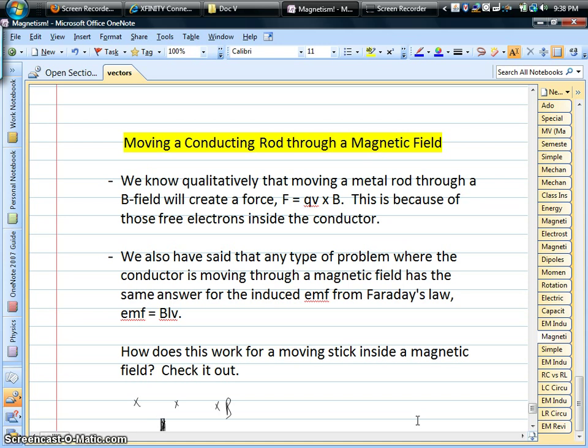It's the case where, instead of having like a loop or a circuit that you're moving through a magnetic field and getting all that weird induction stuff to happen, what if it's just a stick by itself? So there's no real circuit, so you can't sustain a current, but you're still moving a conductor through a magnetic field.